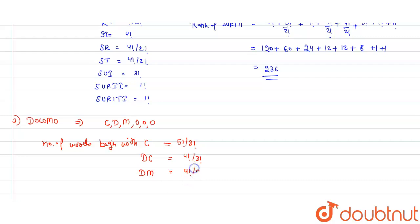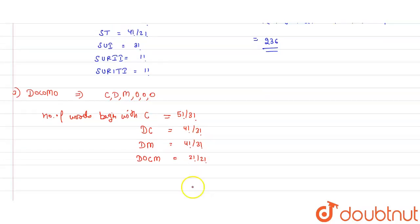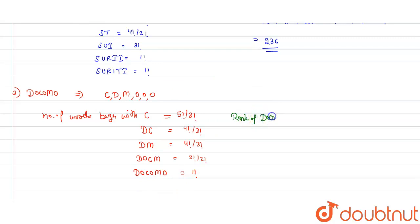Words beginning with DC give 4 factorial divided by 3 factorial. We don't want DC, so we try DM. Words beginning with DM also give 4 factorial divided by 3 factorial. After DM, we look at DO. After DO comes C, and since we want C, we continue to DOM. Words beginning with DOM give 2 factorial divided by 2 factorial since two O's remain. We don't want M, so we go to DOCO, then get M and O, giving 1 factorial.